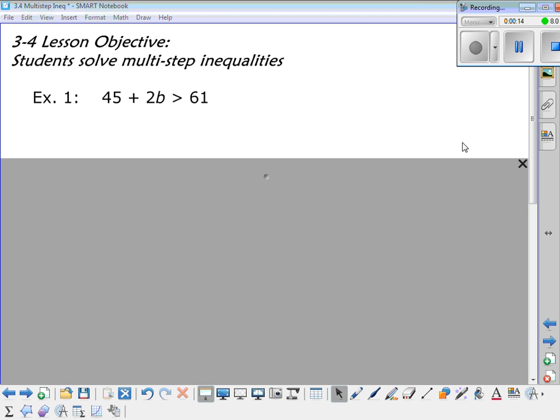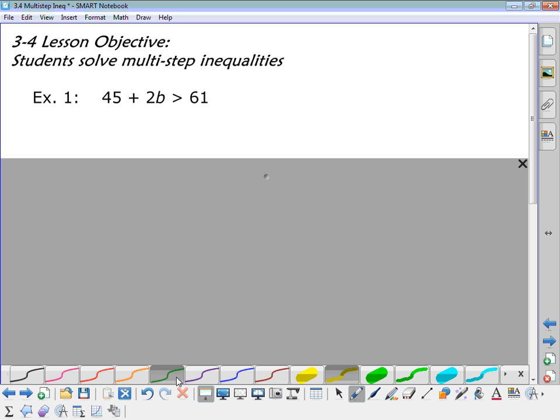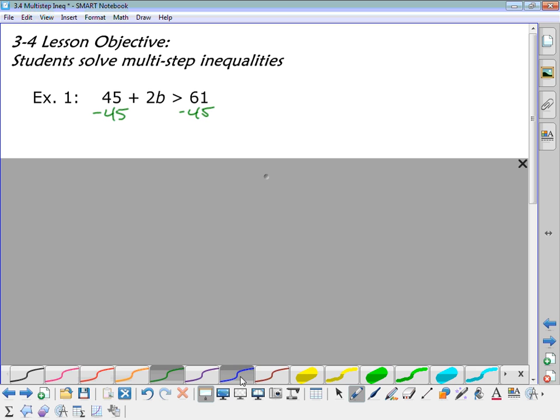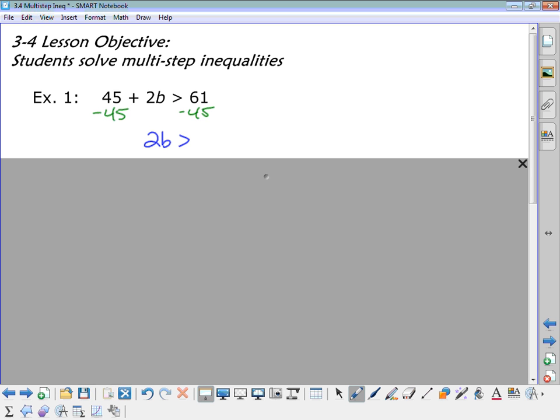So for example 1, I've got 45 plus 2b is greater than 61. So if I want to get the b alone, what's the opposite of adding 45? Subtracting 45, so we subtract 45 from both sides. Then I have 2b is greater than 16. So 2b is greater than 16.